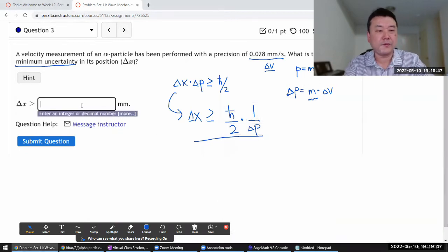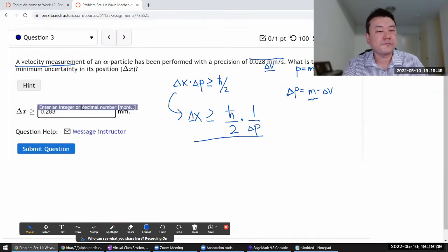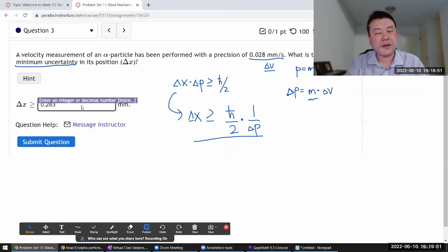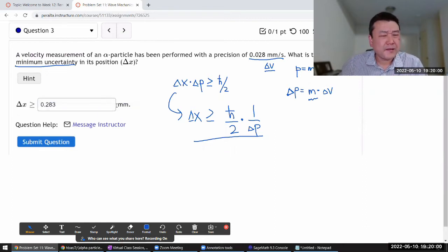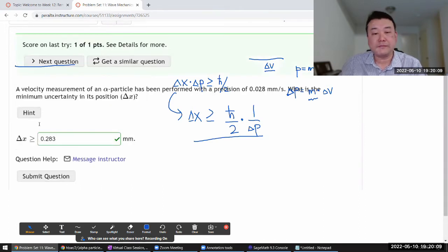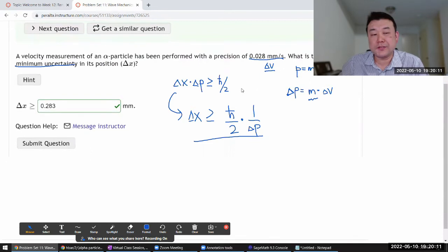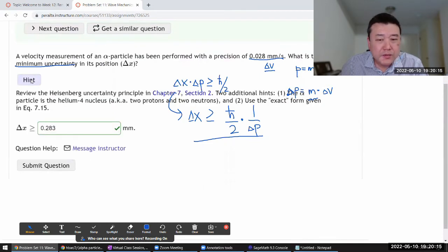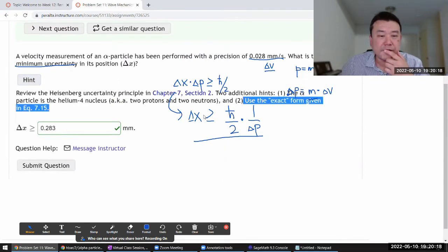Okay, 0.283. Somehow, I don't know, I have no real sense of intuition for these numbers. I get the feeling that millimeter is pretty large uncertainty in position for alpha particle, but I'm just using this formula. One thing that I'm not 100% sure is, yeah, it says use the exact form.